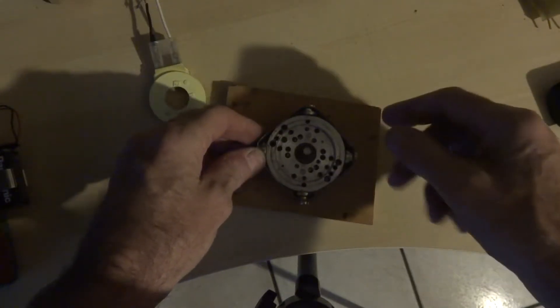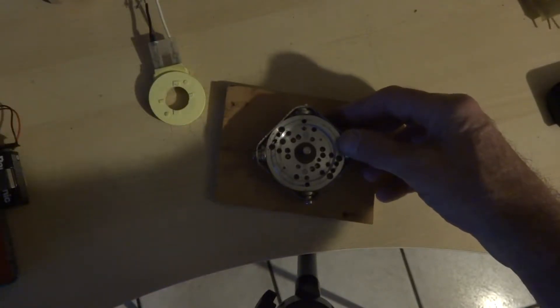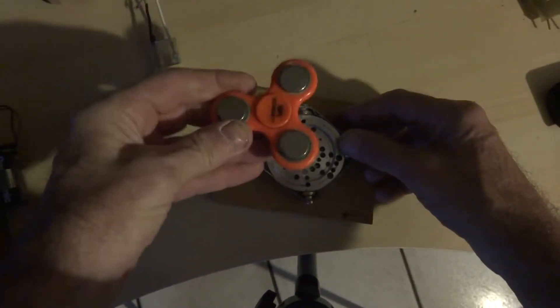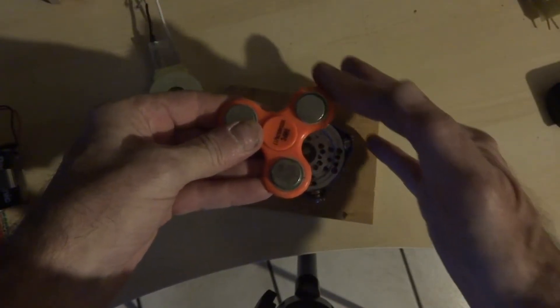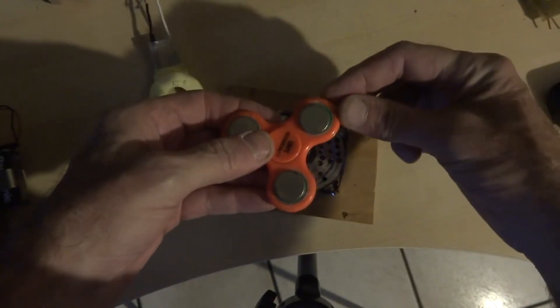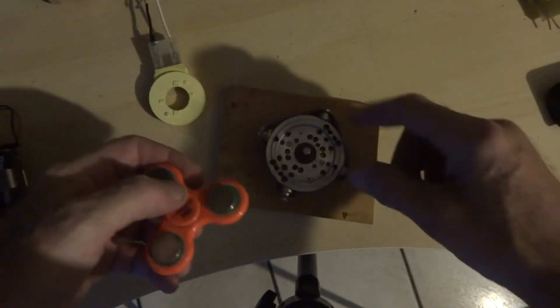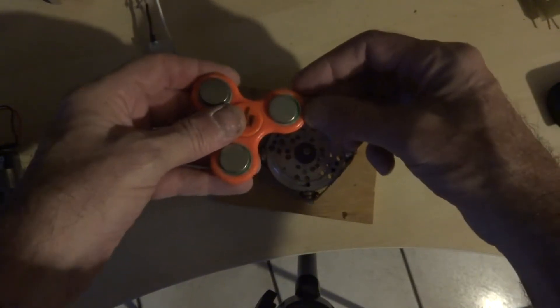I'm using this to demonstrate how you would do it with a fidget spinner. Some of the fidget spinners I have are set up differently, but you could always sand down the end of these arms and super glue some magnets on there, similar to the way this is set up here.